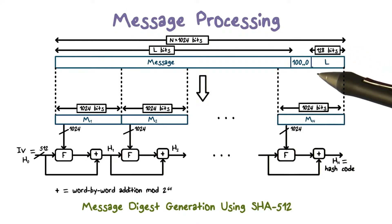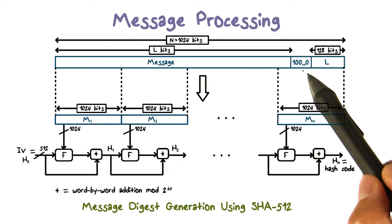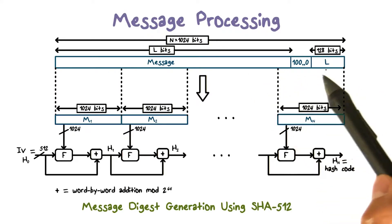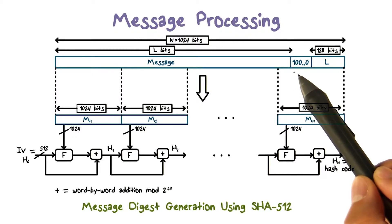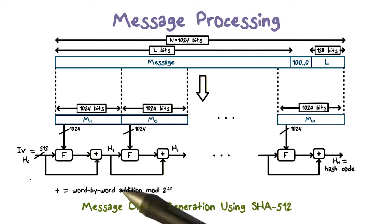First, we leave the last 128 bits to store the length of the original message. That is the length before the padding. Then for the space between the original message and the last 128 bits, we add one and the number of zeros necessary to fill up the space. And that's how padding works.